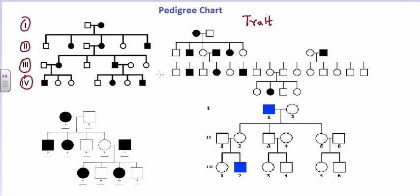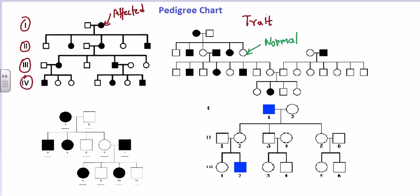Simply put, a filled symbol means a diseased or affected individual, while a blank symbol means not affected, or normal. This applies to all the pedigree charts we'll be discussing. In all of these pedigrees, we are going to see a particular disease spreading from one generation to another generation.